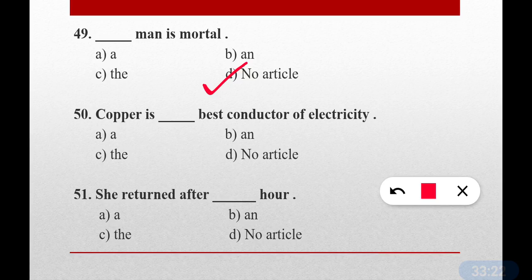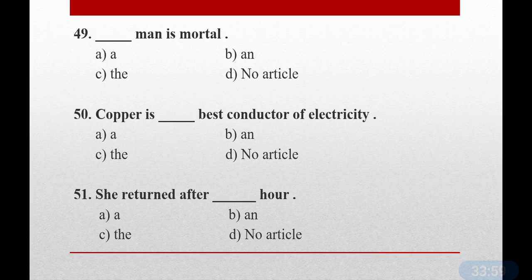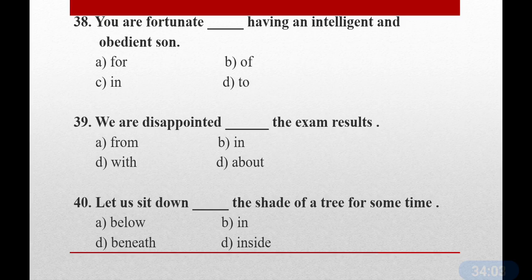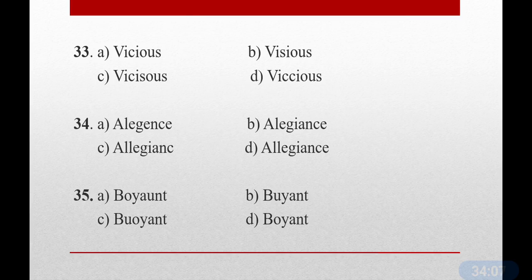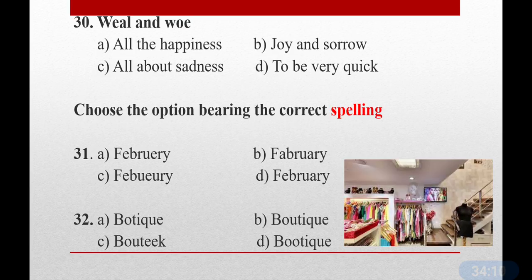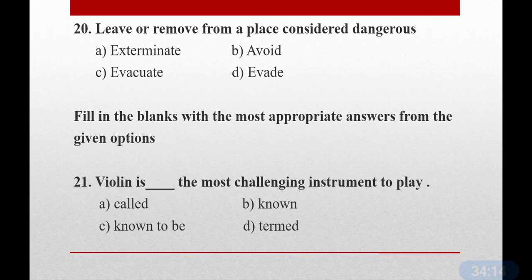Last question: Copper is dash best conductor of electricity. Before 'best', we always use 'the'. Correct: Copper is the best conductor of electricity. As a bonus question: she returned after dash — answer it yourself in the comments. Also, the answer to the last science video question about which compound doesn't form ions is CHCl3. This ends the English mock test of 50 questions. Please like, share, and join the Telegram channel. Thank you!